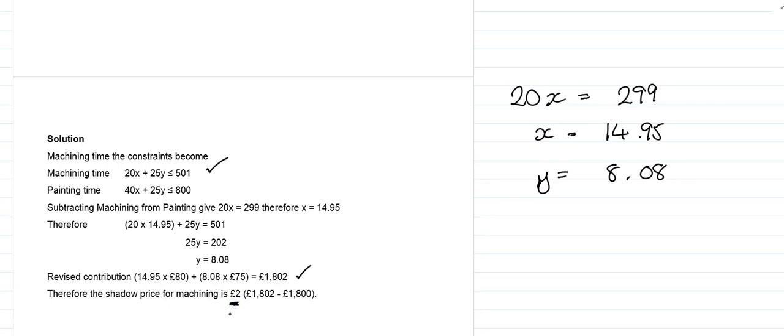So we could then go on to say if the cost originally of one machine hour is £25...